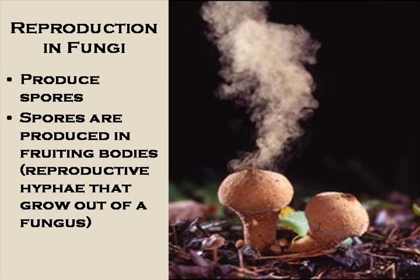Fungi produce spores in structures called fruiting bodies, which are the reproductive hyphae that grow out of a fungus. The appearance of fruiting bodies varies from one type of fungus to another. You're most familiar with the mushroom — the mushroom cap is the fruiting body, while the actual fungal body is the hyphae growing underground. In bread molds, after a mold has been living on bread for a while, you'll see stalk-like structures grow upward from the hyphae on the bread's surface.